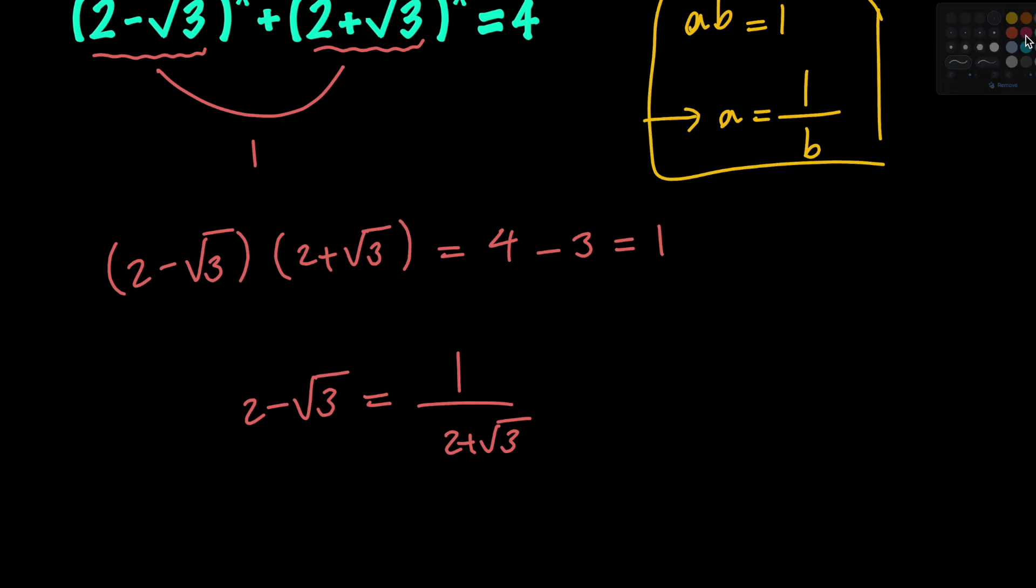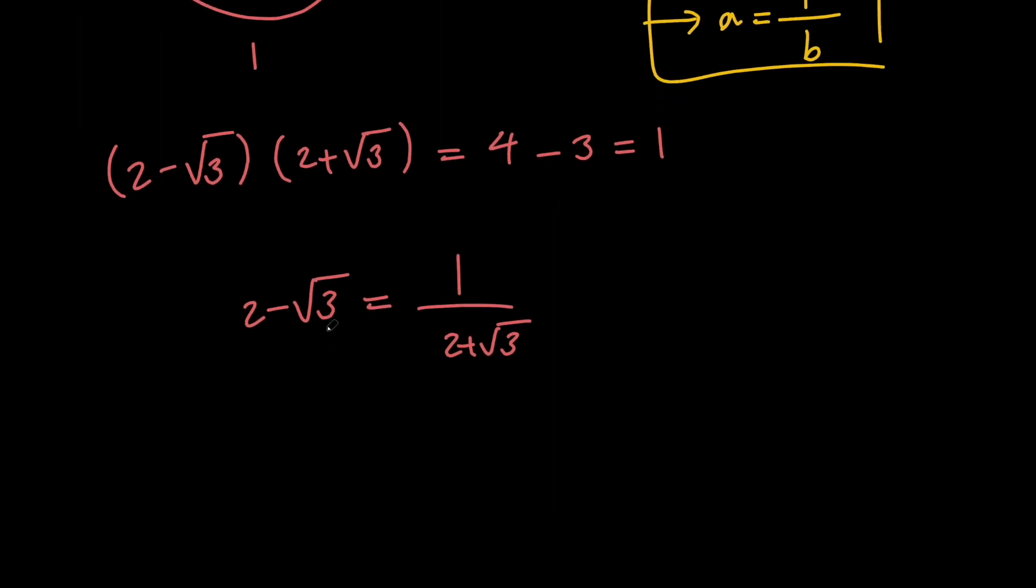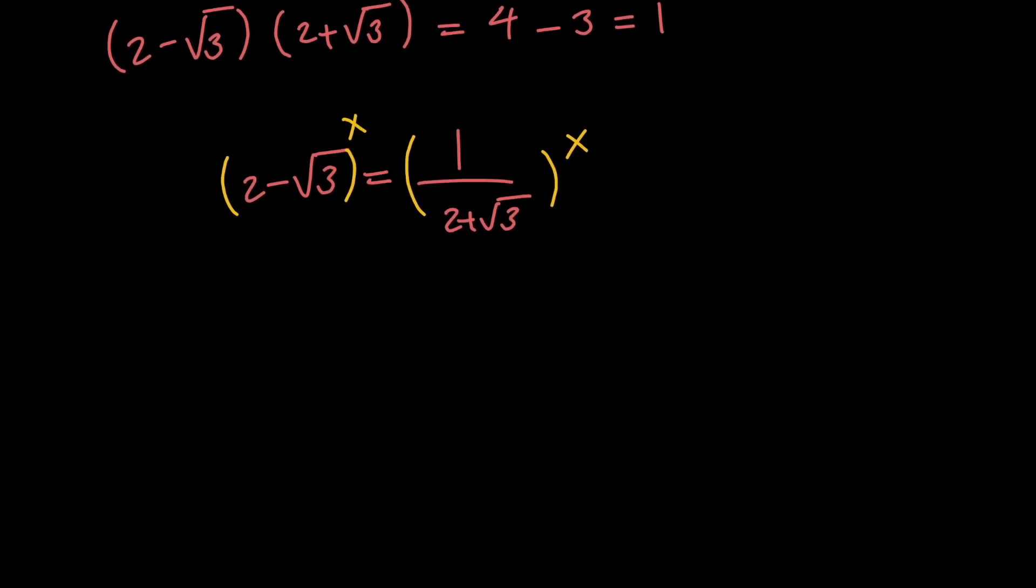Now, if you go ahead and raise both to the x power, we can go ahead and say that 2 minus root 3 to the x power is equal to 1 over 2 plus root 3 to the x power, which means that they are reciprocals.